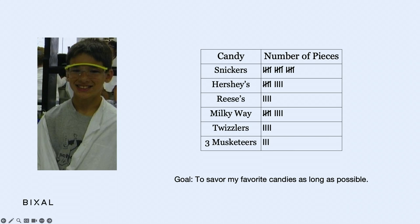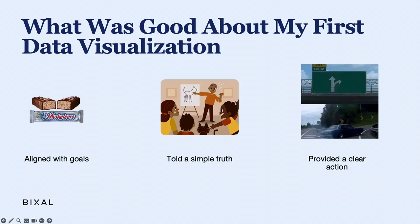It didn't have any special diagrams or functionality, but it did exactly what I needed. It was aligned with my goals — if I had just counted the total number of pieces or measured by weight, I wouldn't have known how many Three Musketeers I could eat. I needed to break out the count by candy type. Secondly, it told the truth in a simple way. And it can be tempting to make fancy impressive dashboards that tell clients what they want to hear, but if we aren't telling the truth in a way that's easy to understand, our projects won't meet their goals.